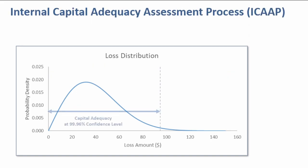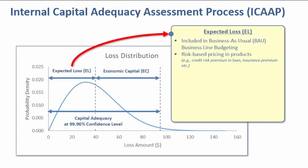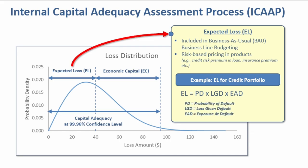The first component of capital adequacy is expected loss which is included in business budgeting and is reflected in risk-based pricing for products. An example in Basel II and Basel III for credit portfolio is that EL equals PD times LGD times EAD. In general, it relates to the earnings volatility of a company.